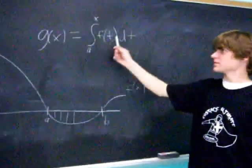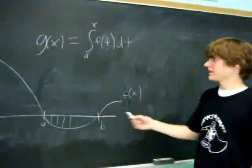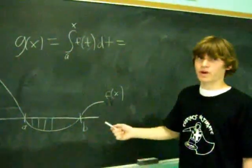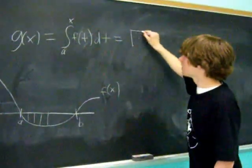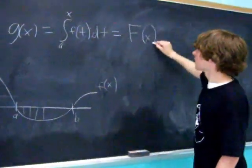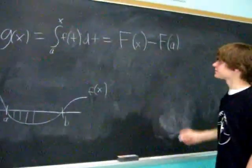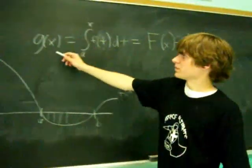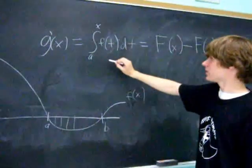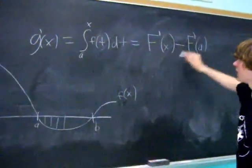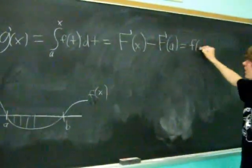We know that g of x is equal to the integral from a to x of f of t dt, because we define it as a function. And from part one of the fundamental theorem, we know that this is equal to F of x, the antiderivative. So when we take the derivative of this, we set up taking the derivative of this part, which is the antiderivative of f of x.